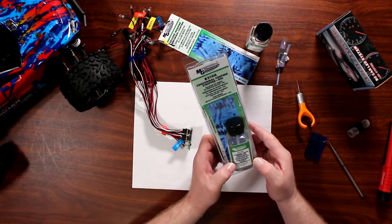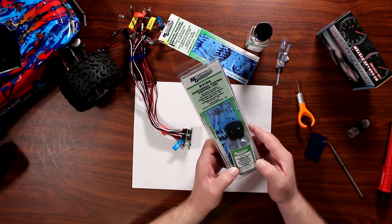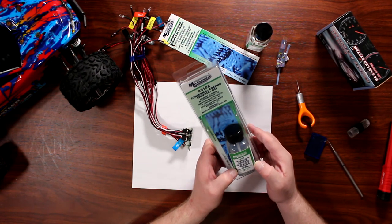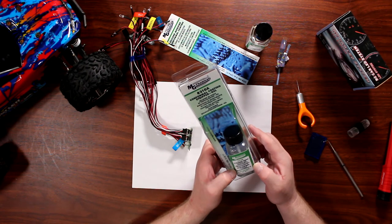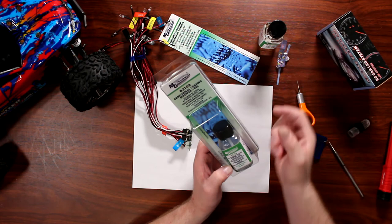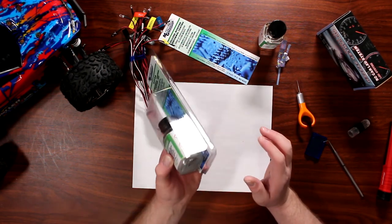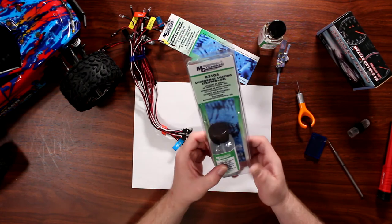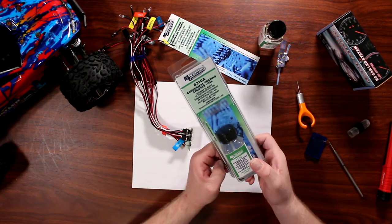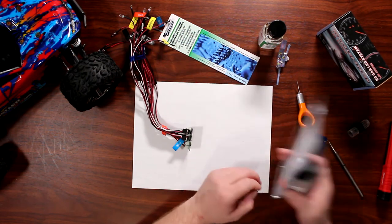This is from MG Chemicals—the 8310A conformal coating stripper gel. Basically what this is: it removes the conformal coating and strips it. Again, nasty stuff. I will put some links in the description and the model product in the description for you guys.